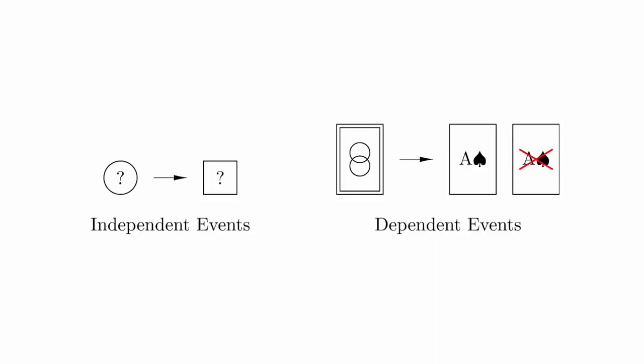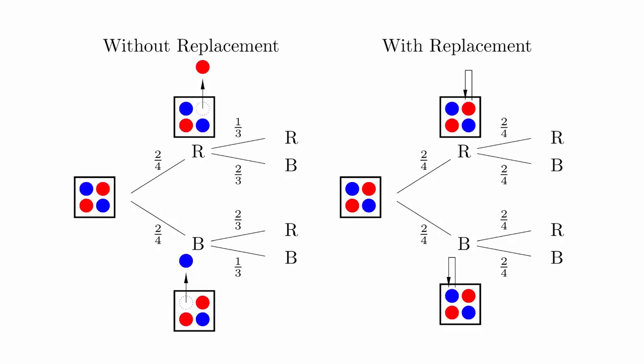We can use a probability tree to think about the nature of dependent and independent events. Suppose we have an urn that contains two blue balls and two red balls. Here are the probability trees for drawing with and without replacement. Notice that if we do not replace the ball, the probability trees for the second event are different. But if we do replace the ball, the probability trees are the same.